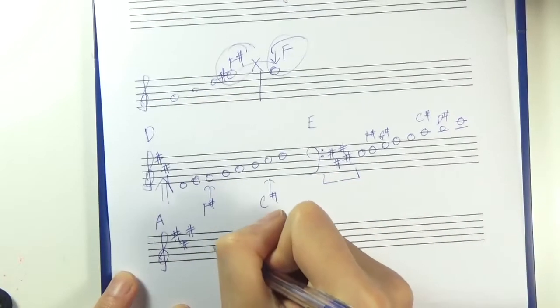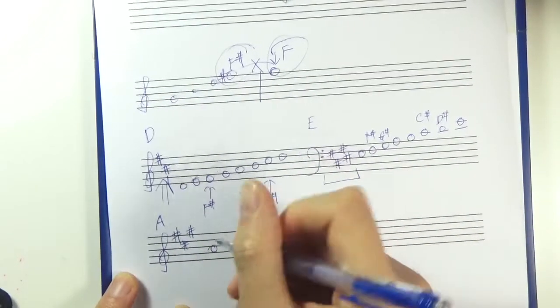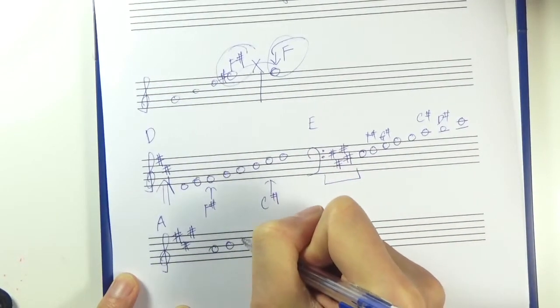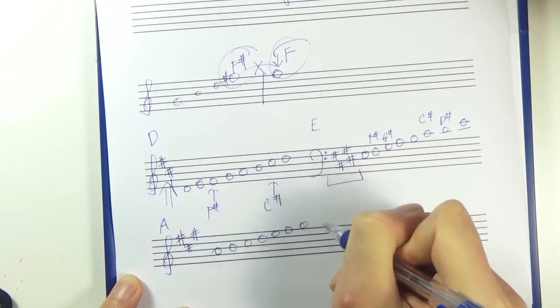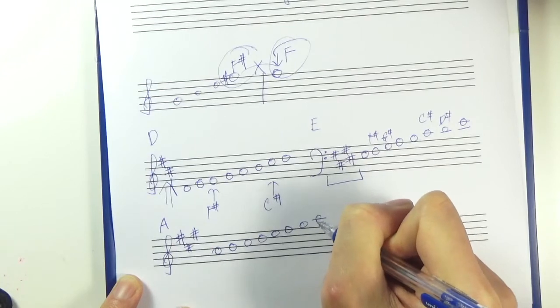And then you put A here. A, B, C sharp, D, E, F sharp, G sharp, A.